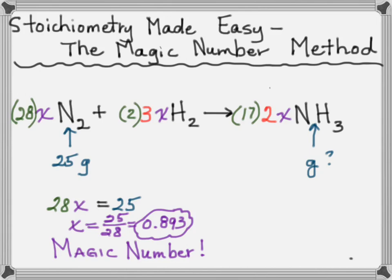Here's how you use it. You want to know about ammonia, so 17 times 2 times X. We know X, it's 0.893. You get 30.36 grams of ammonia.